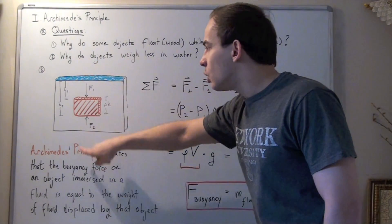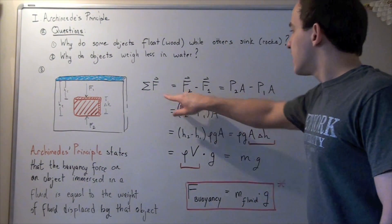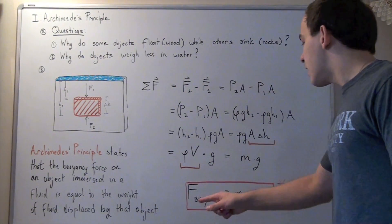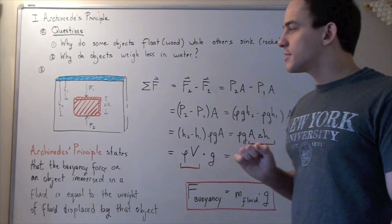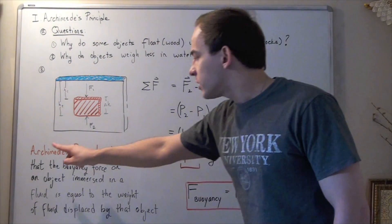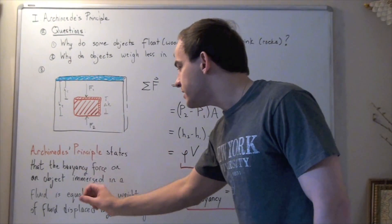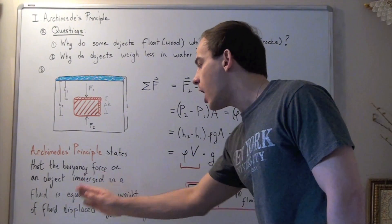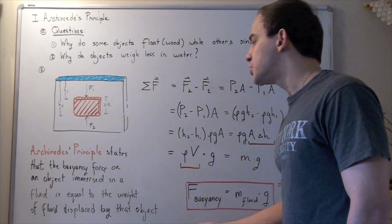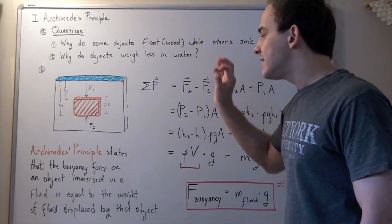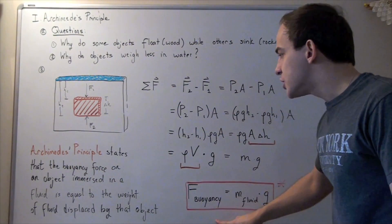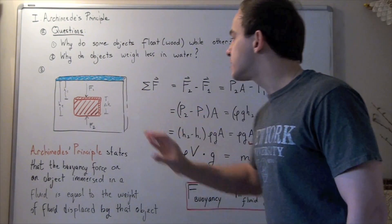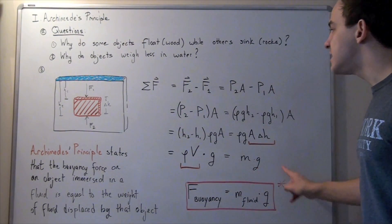So the net force acting along the Y direction is known as the force of buoyancy, or the buoyancy force. This buoyancy force comes from Archimedes' Principle, which states that the buoyancy force on an object immersed in a fluid is equal to the weight of that fluid displaced by that object — that is, the mass of the fluid displaced multiplied by the gravitational constant.